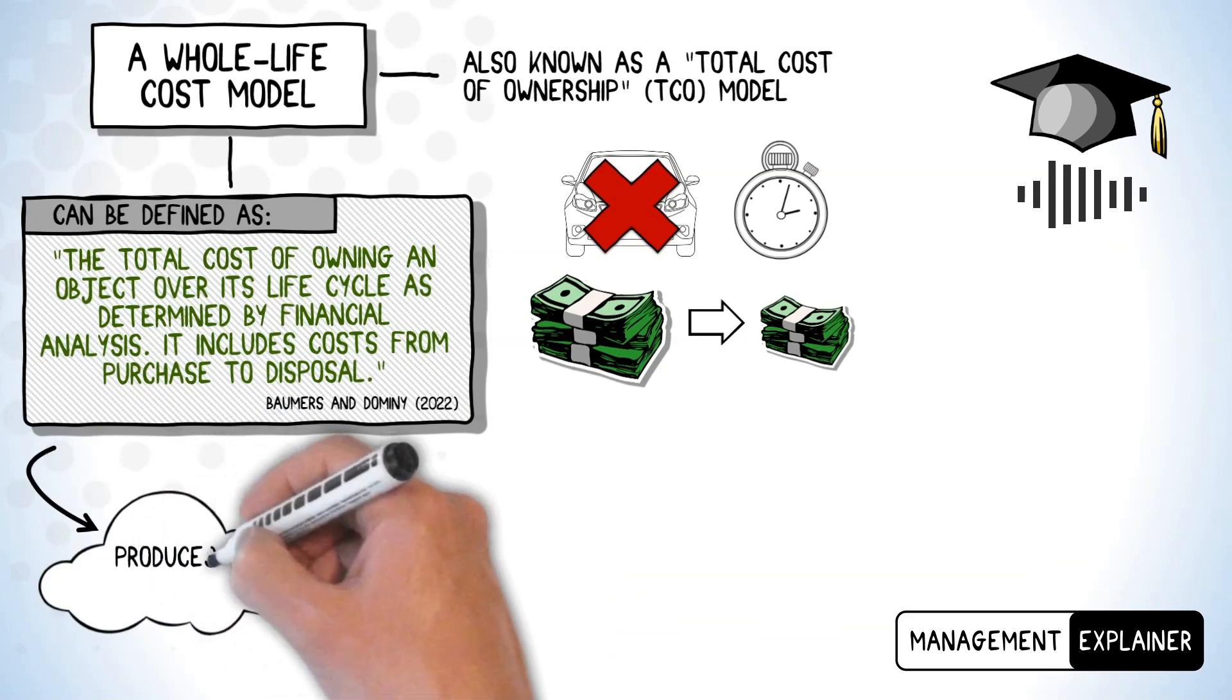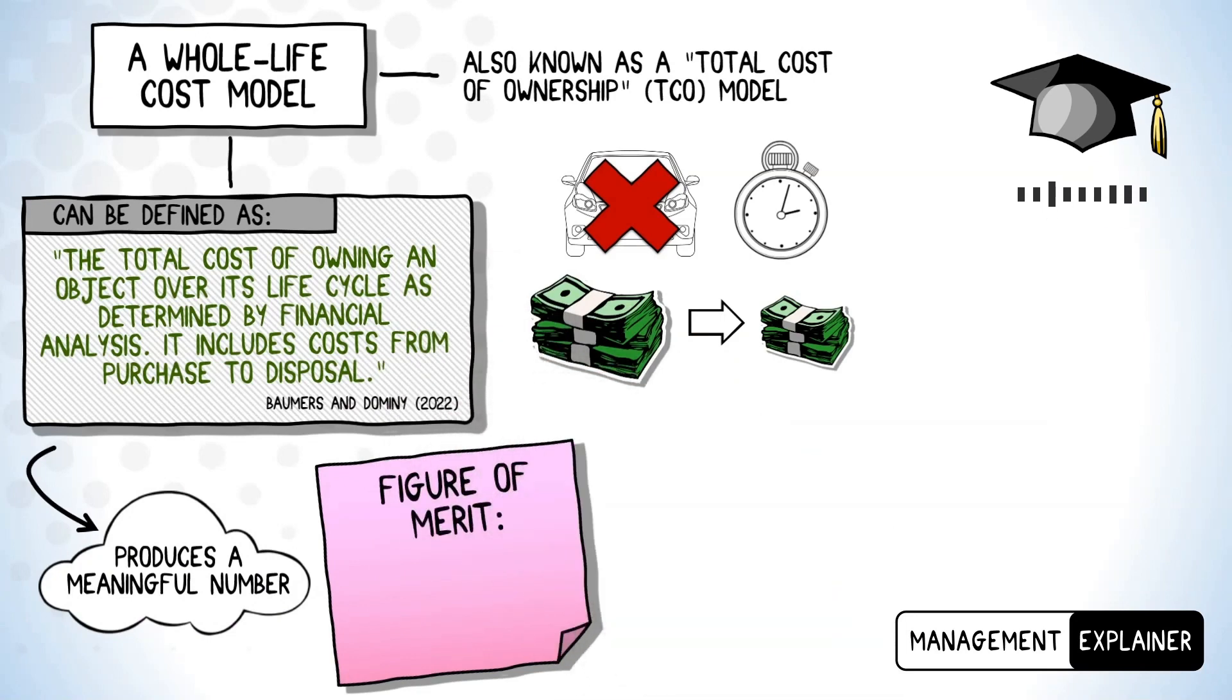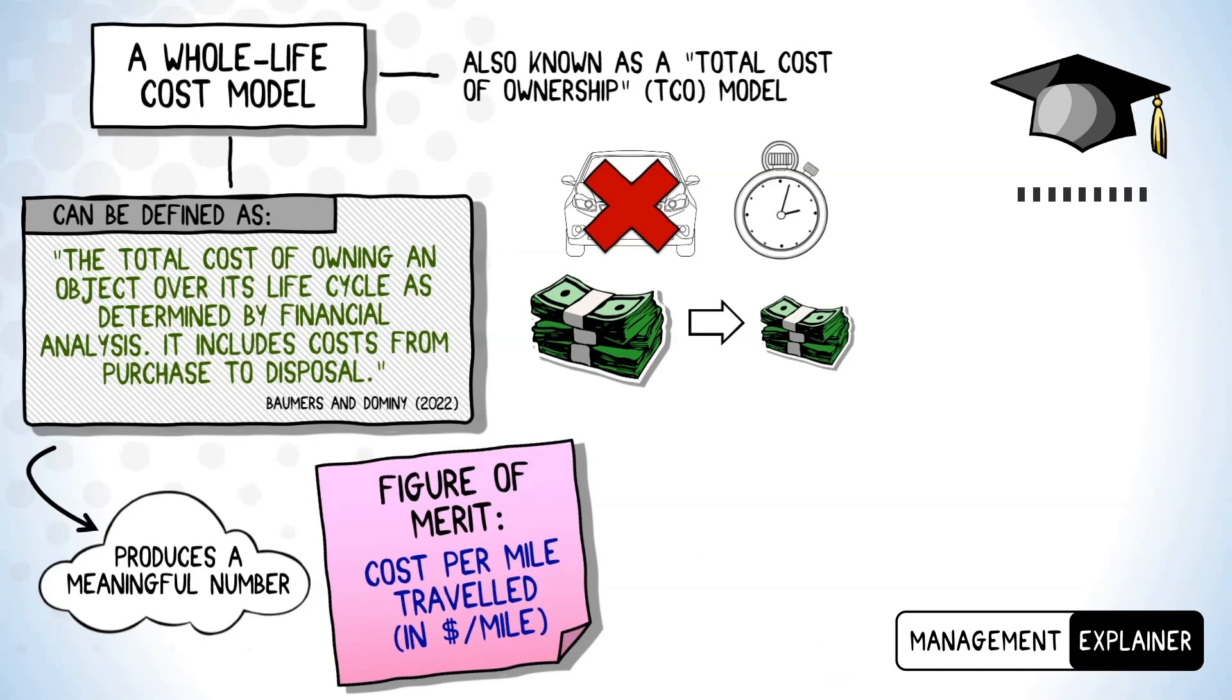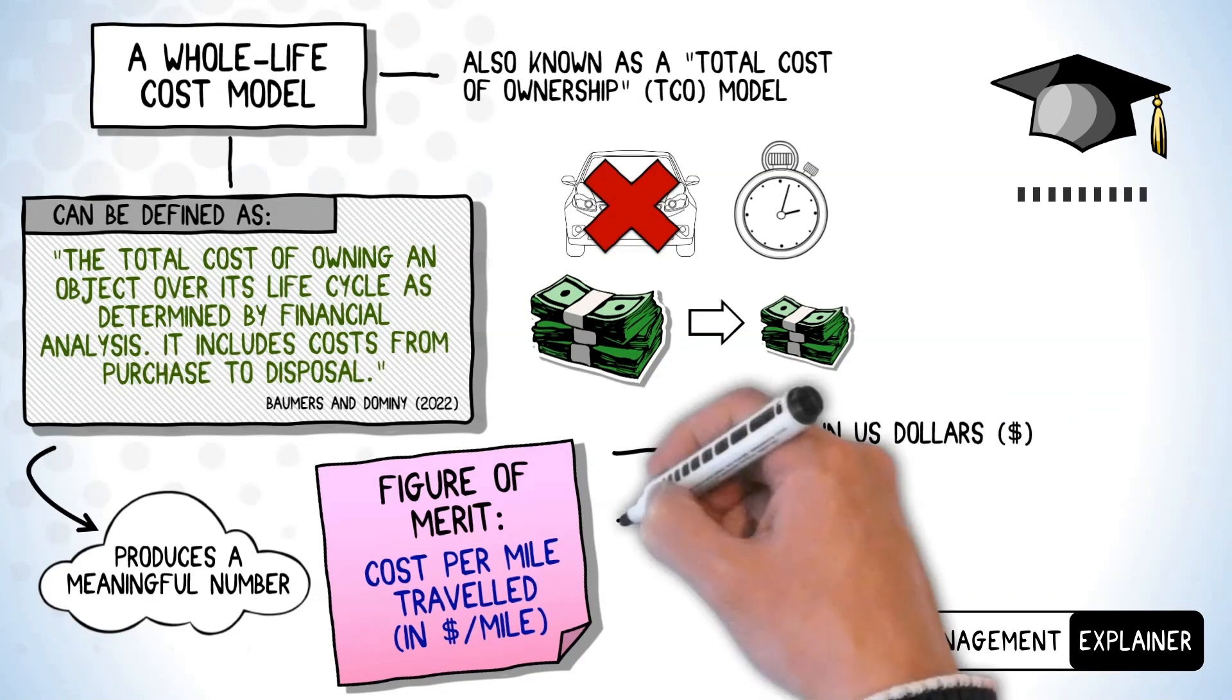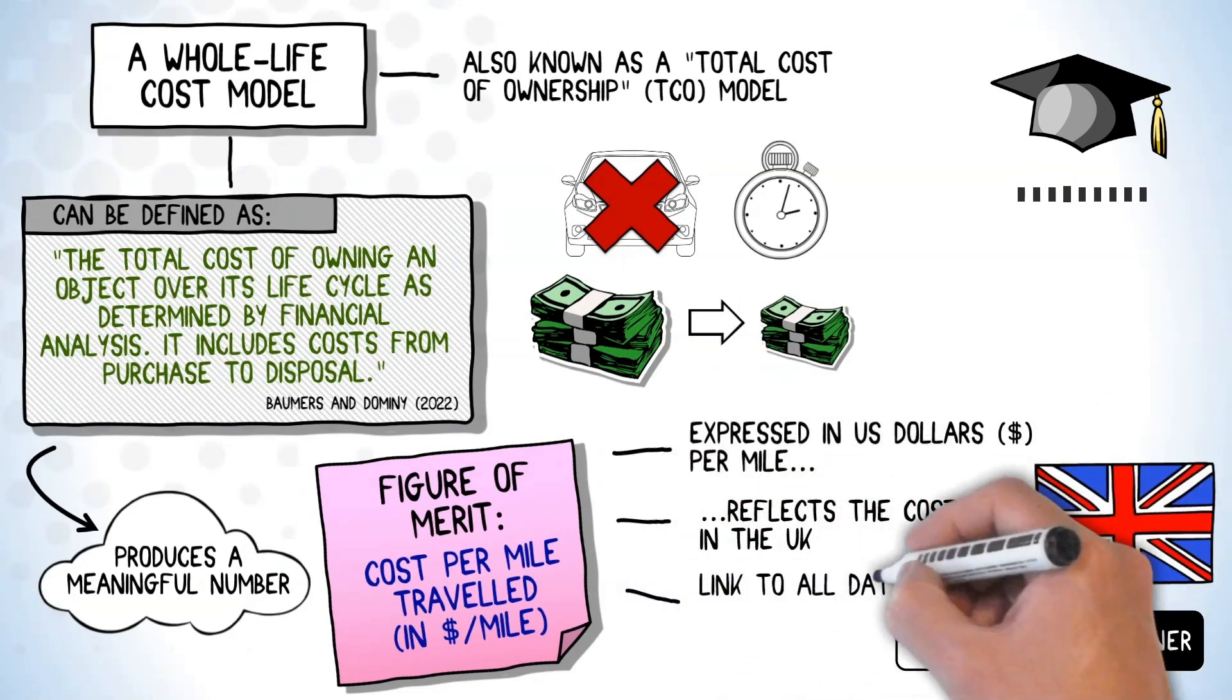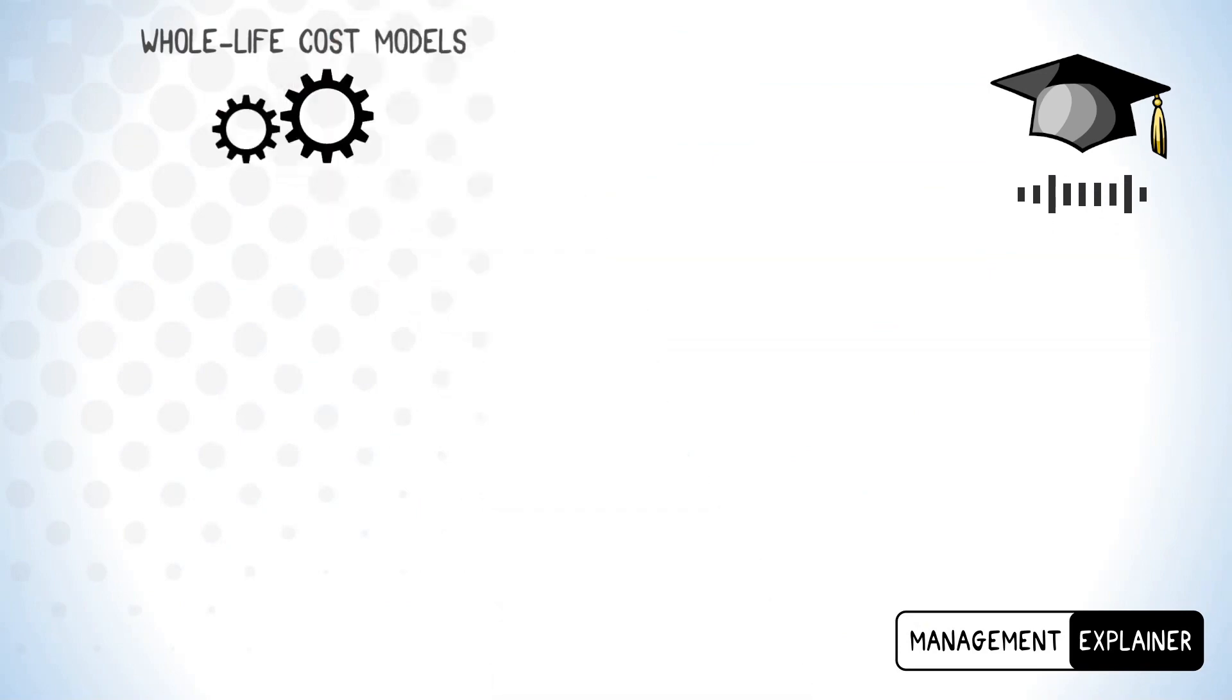The next thing is to decide how we're going to boil down our cost model so that it produces a meaningful number that reflects what we want to know. This is called selecting the figure of merit. In the case of personal vehicles, the figure of merit is usually the cost per mile traveled. I'm going to express the model in US dollars per mile. Our model reflects the costs of running a Lamborghini where I live, which is the UK.